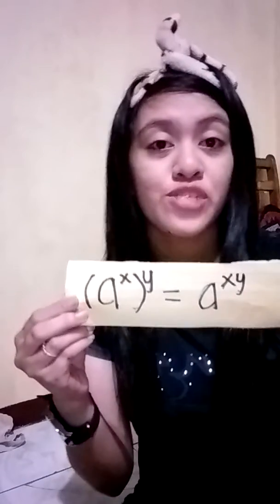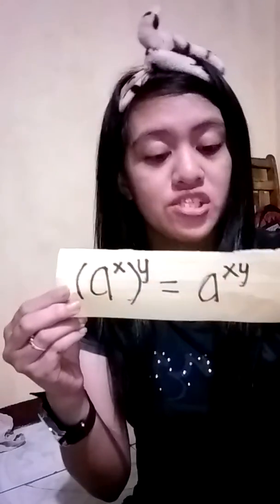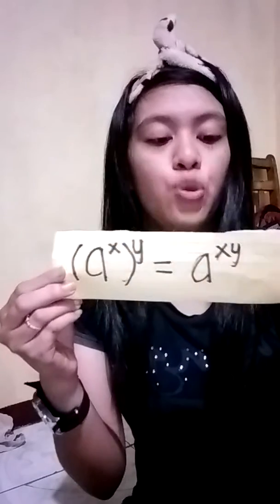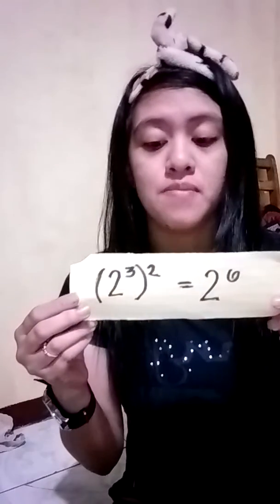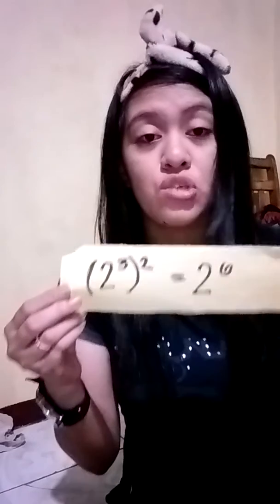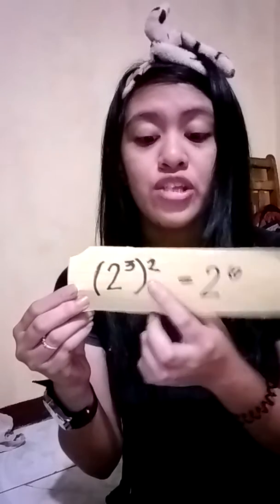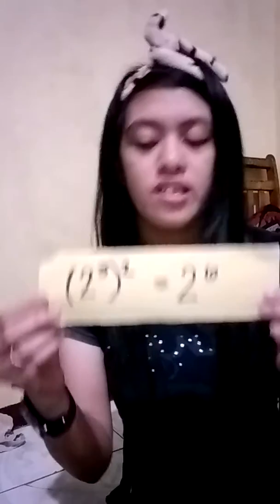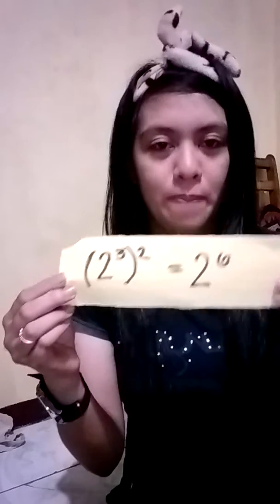So another one. If the given example looks like this, its format is a raised to the power of x, raised to the power of y, is equal to a raised to the power of x times y. So I will give you some examples. 2 raised to the power of 3, raised to the power of 2, is equal to 2 raised to the power of 6. Because all we have to do in this equation is multiply each exponent. Since our exponents are 3 and 2, that's why we come up with the answer of 6.